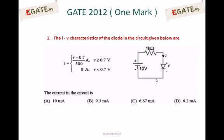The current in the circuit is: A, 10 mA; B, 9.3 mA; C, 6.67 mA; D, 6.2 mA.